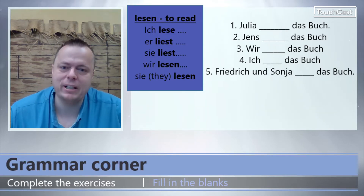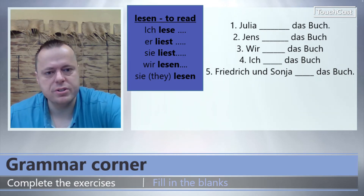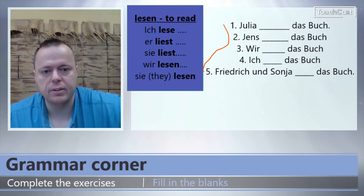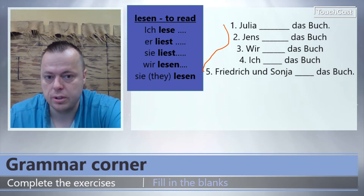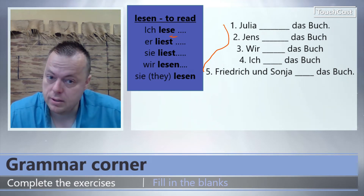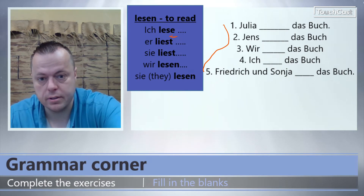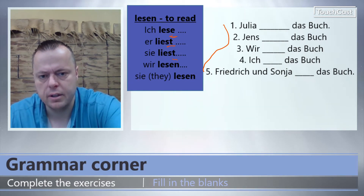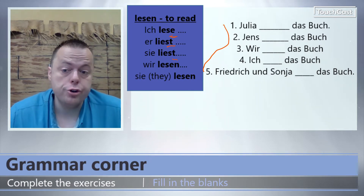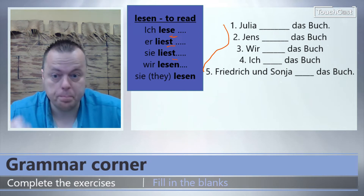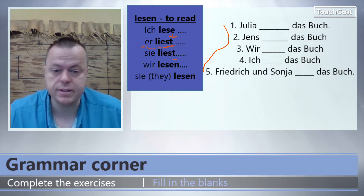Okay, Klasse. Guten Tag. Here's the grammar corner for today. Your goal is to answer questions one through five. Just as a quick review: whenever you have ich, you get ich lese. If you say er or sie, you say liest. It gets a T at the end. If you are referring to one person, like Billy - er - so Billy liest something, a Buch.